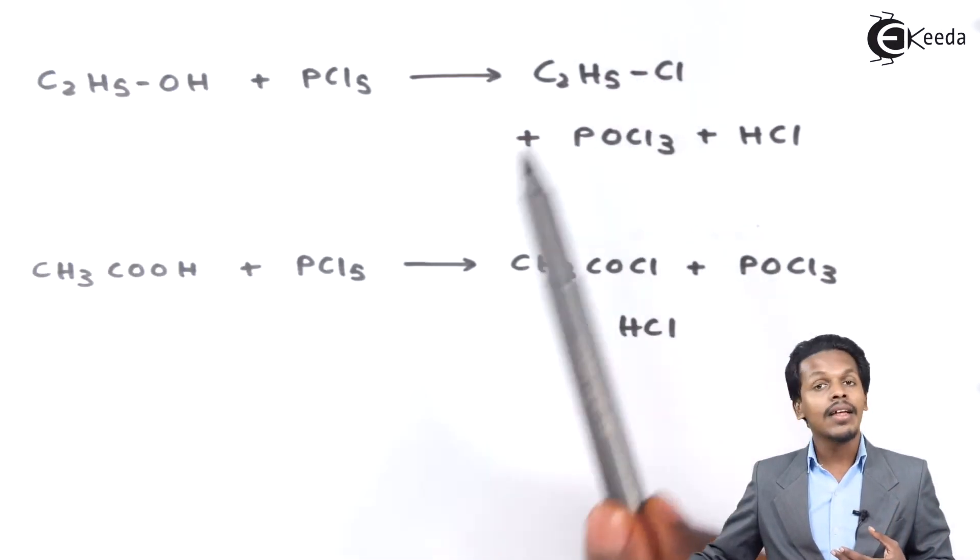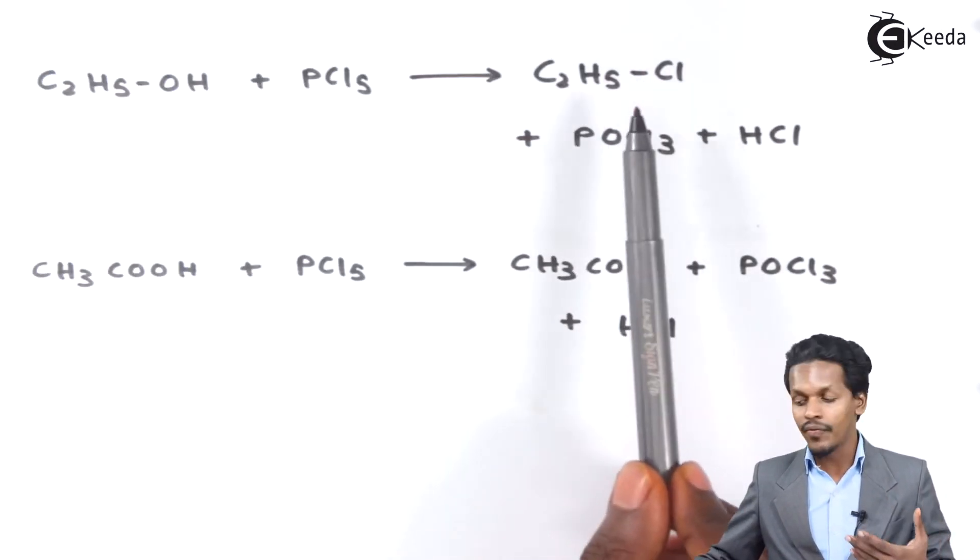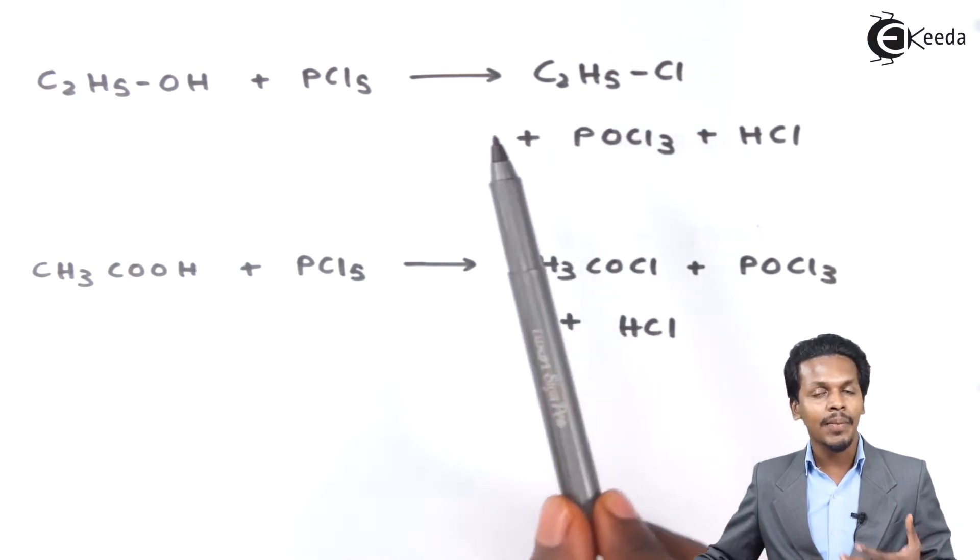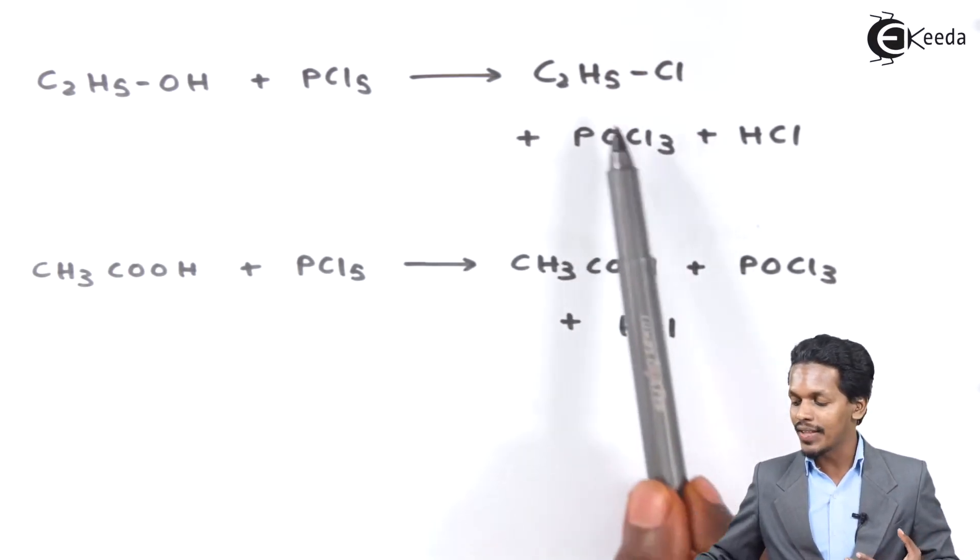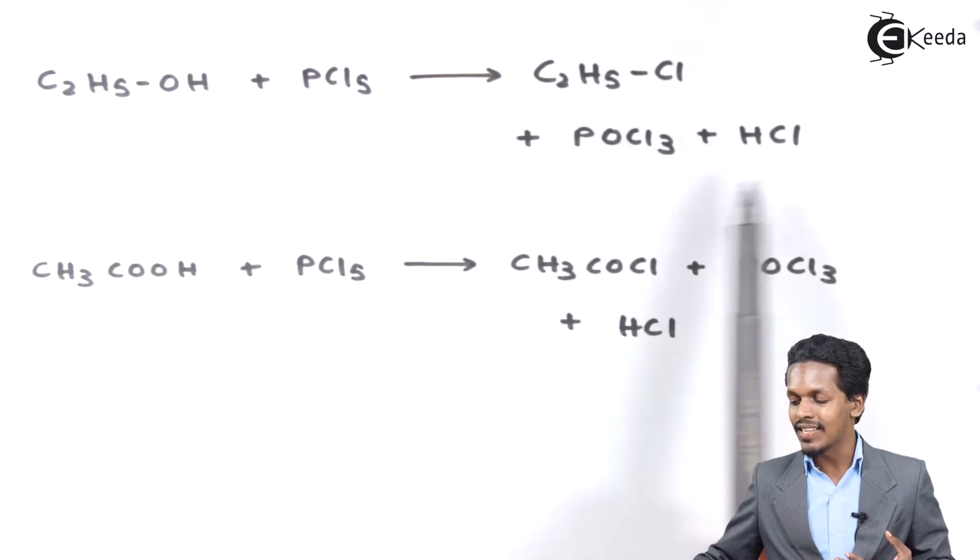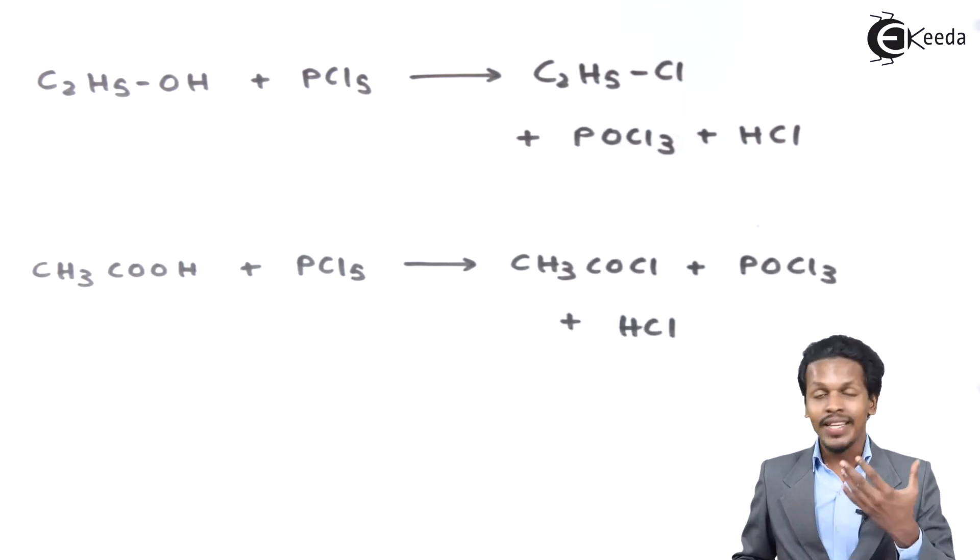In that case we can get HDA, that is halogen derivative of alkane. In this case, it is alkyl halide, known as ethyl chloride, along with POCl3 and HCl as a by-product. And talking about the next one.